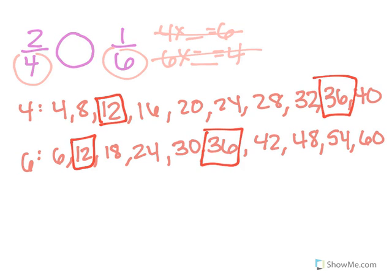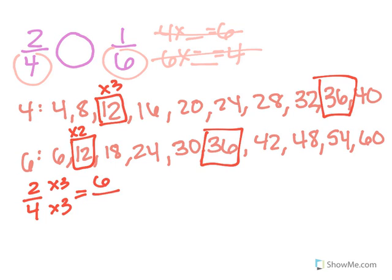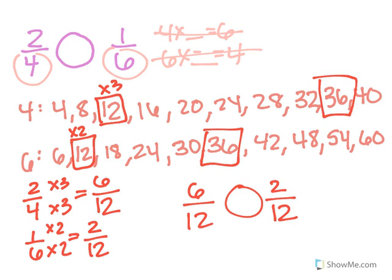I could choose either one because they're in common, but I'm going to do the smaller one because it will be easier to get to. This one I have to multiply by 2, this one times 3. So that means I need to multiply 2 fourths by 3 and 1 sixth by 2. And if I do it to the denominator, I have to do it to the numerator. So 2 fourths — multiplying top and bottom by 3 — gives me 6 twelfths. 4 times 3 is 12. For 1 sixth, I multiply by 2: 1 times 2 gives 2, and the denominator is 12.